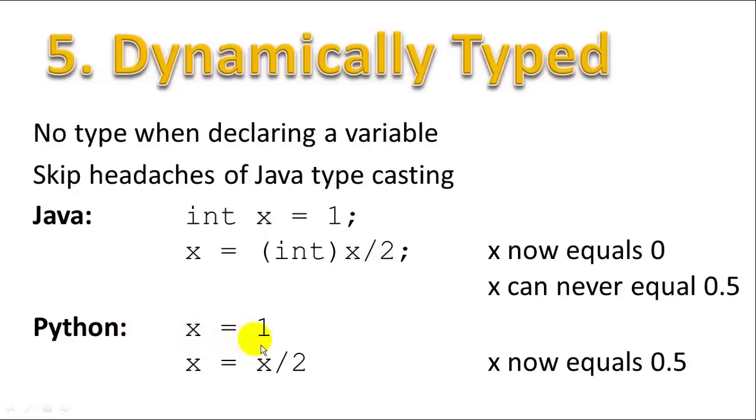In Python, you can say X equals 1, and this happens under the hood. Python takes care of your type management, so you don't have to worry about it. At this point, X is an integer type. And then when you say X equals X divided by 2, the result, as you would expect, is X is now equal to 0.5. And if you look at X's type at this point, it's now a floating-point variable.